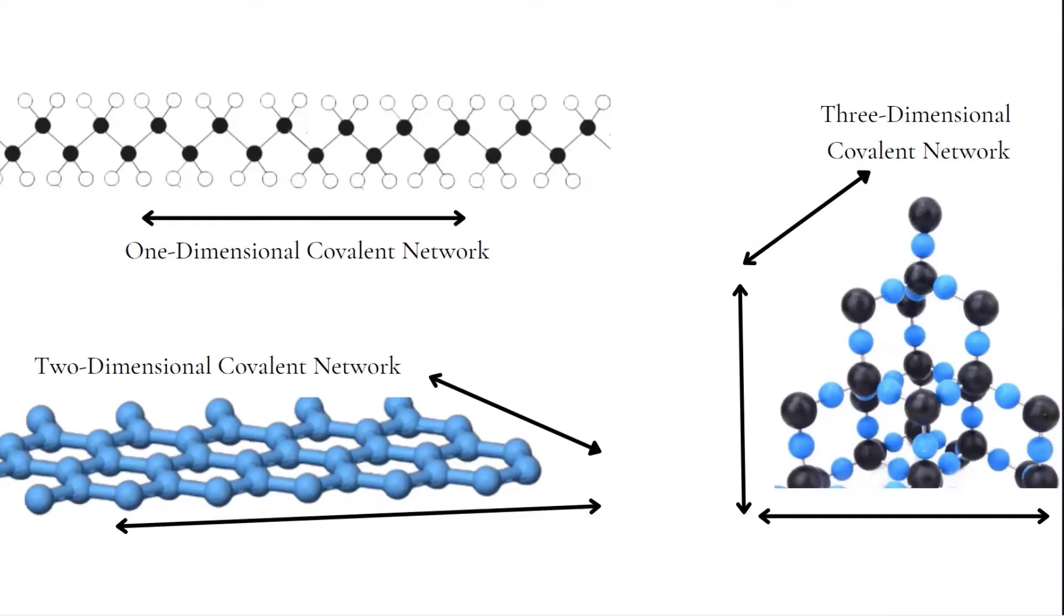The particles within covalent network solids are atoms. In a covalent network solid, the atoms are covalently bonded to each other to form a large network that extends in either one, two, or three directions.